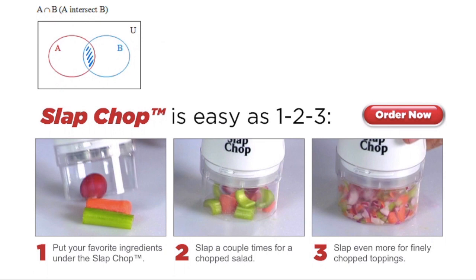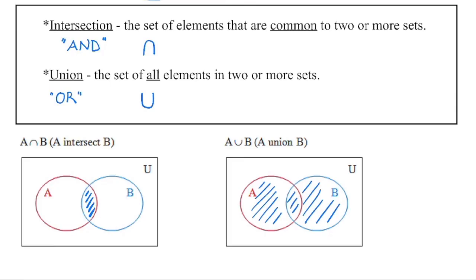When we think of the intersection, we can think of the slap chop — it's a little device with blades that comes down and chops out that middle section. So that's the elements common to both A and B. The union symbol looks like a U for union.